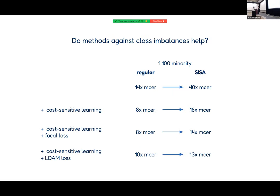One might ask: since this seems to be an issue with imbalanced datasets, maybe methods that help against class imbalances in general would also help here. It turns out they do help — for example, the 14x multiple gets lower if you use cost-sensitive learning or combinations with different loss functions such as focal loss and label-distribution-aware margin loss. But what stays the same is that additionally using SISA to train these models makes this multiple higher — the relationship between minority and majority class becomes more imbalanced.